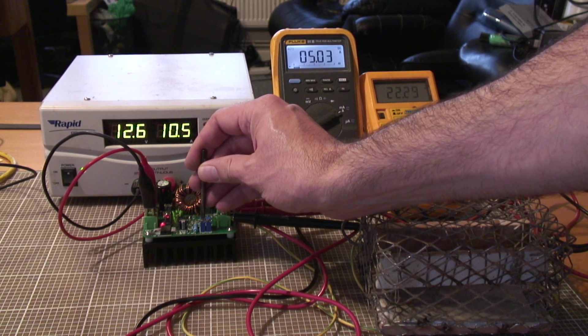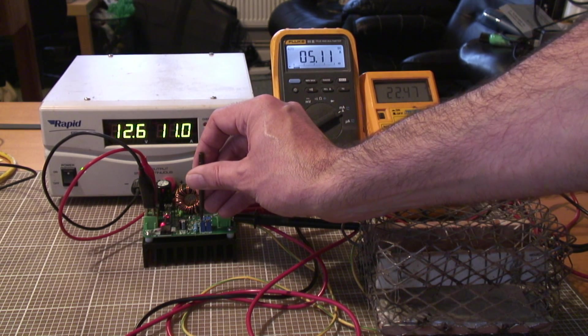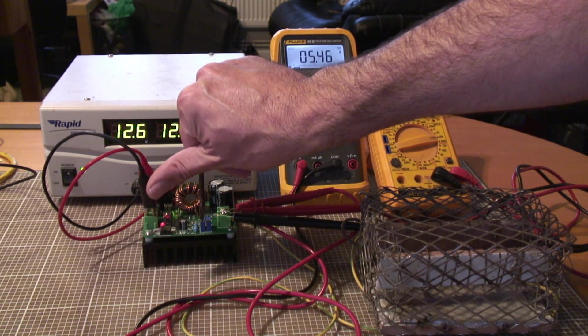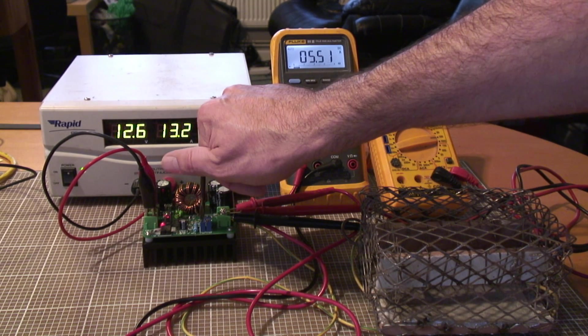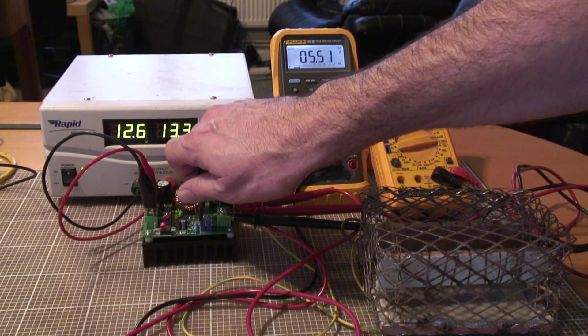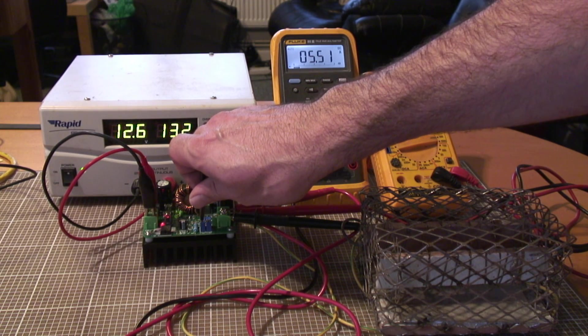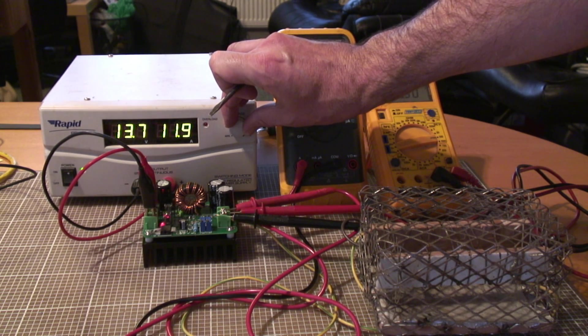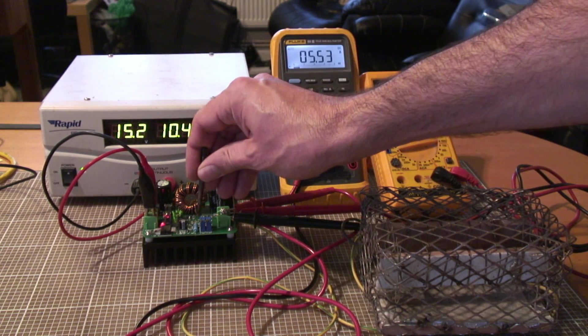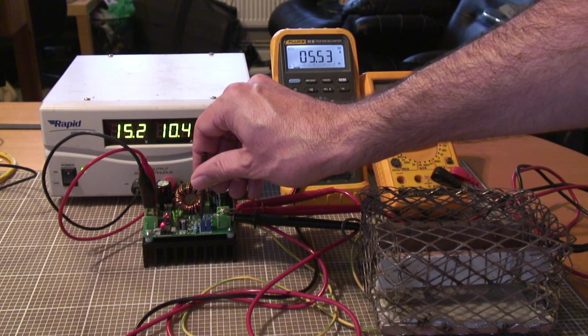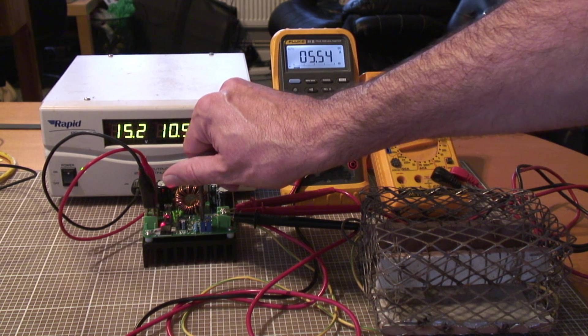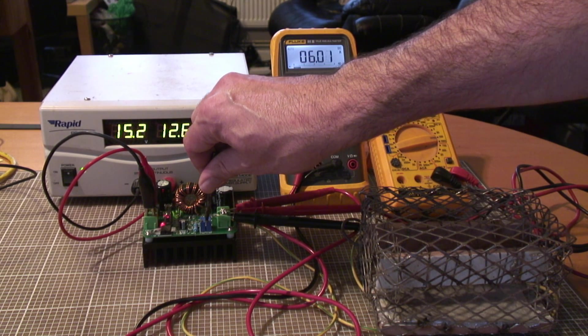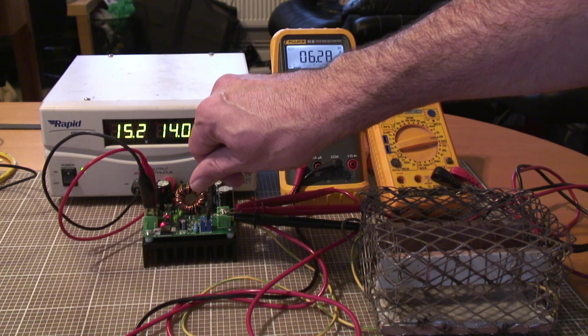So I'm going to crank up the current limit. We're supposed to be able to do 10 amps on the output, I believe. So take it up to 6 amps. Well, that sounds like it's struggling there. I can hear the inductors starting to wind there. Let's give it a bit more voltage on the input. And we'll give it a full 15 volts on the input. So there'll be a point at which we can't actually get any more out of it. And we're hitting 10 amps on the output, which, there we go, 11. No, that's the input, sorry. That's us hitting 6 amps on the output.